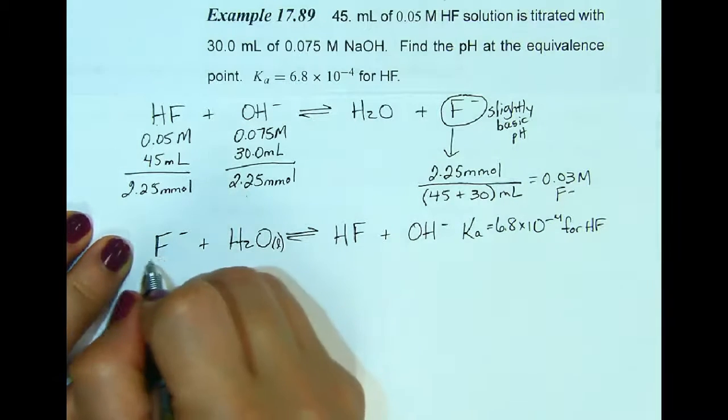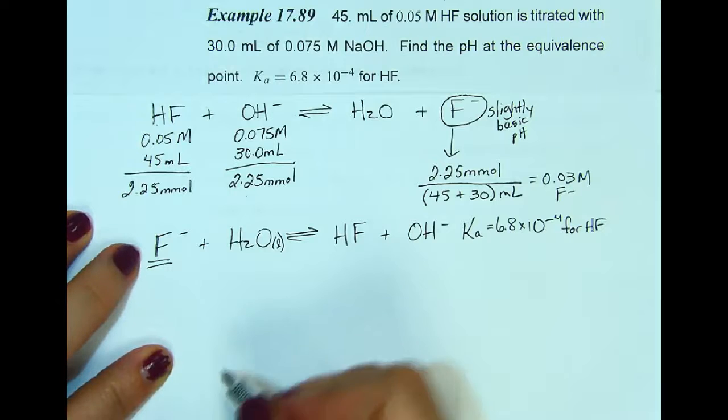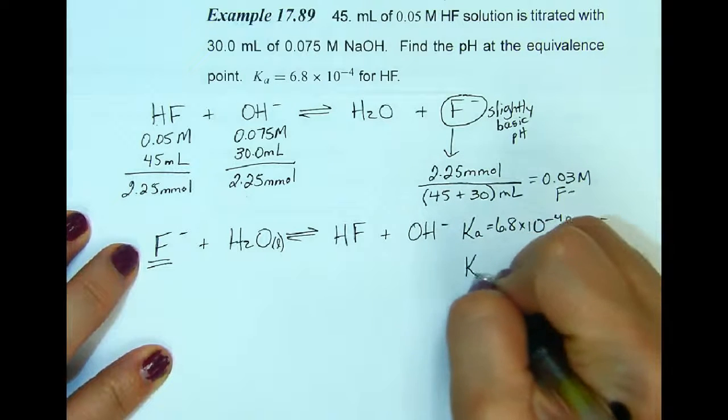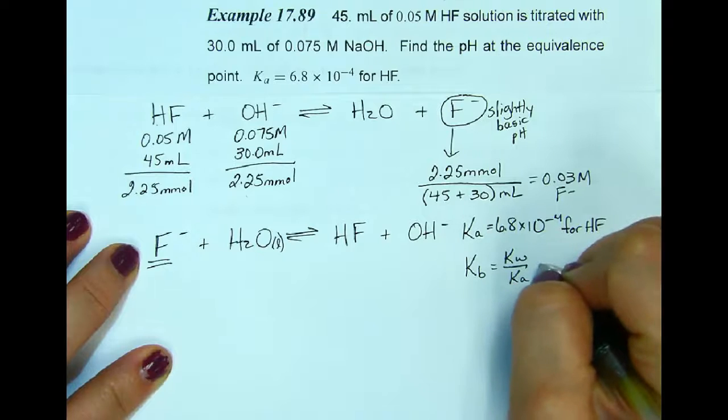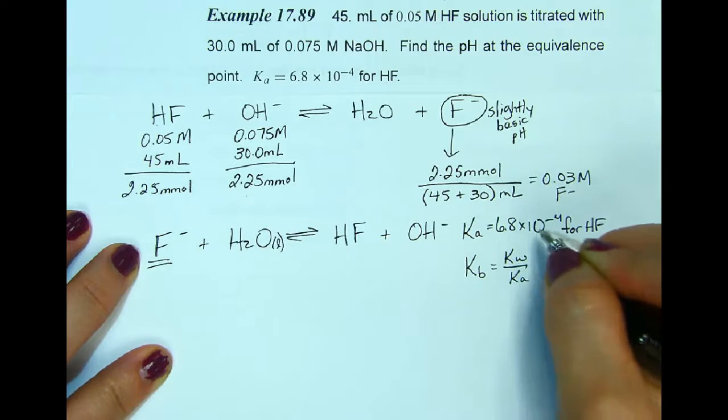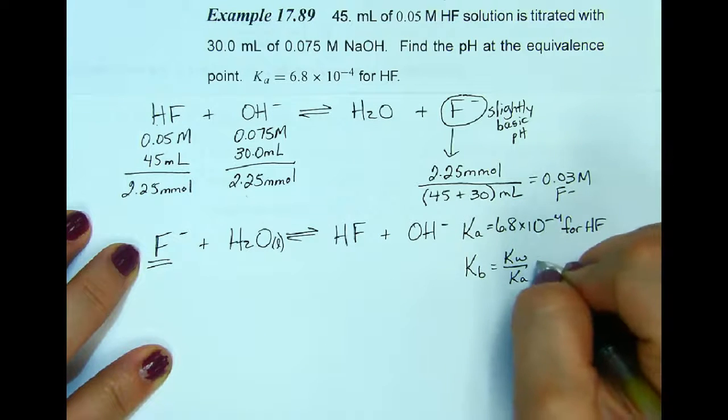However, we're going to be doing this ICE table with fluoride, which means I'm going to need the Kb, which is equal to the Kw divided by the Ka. That's 1 times 10 to the negative 14 divided by 6.8 times 10 to the negative 4. We're going to get 1.47 times 10 to the negative 11.